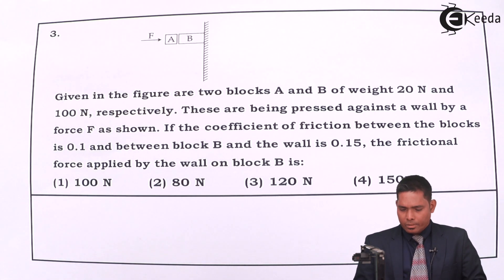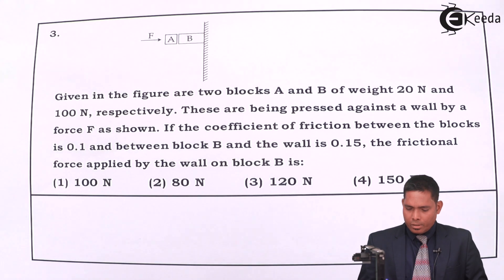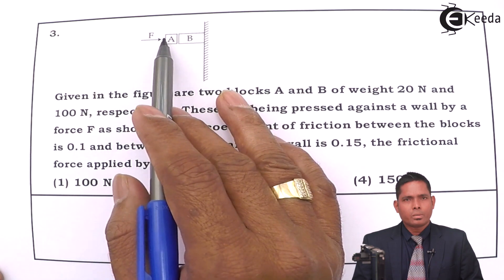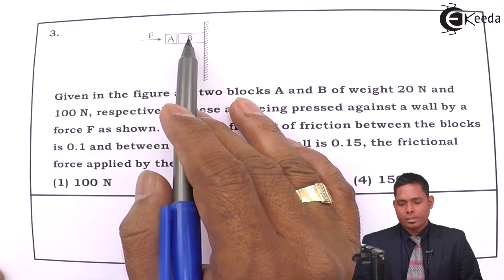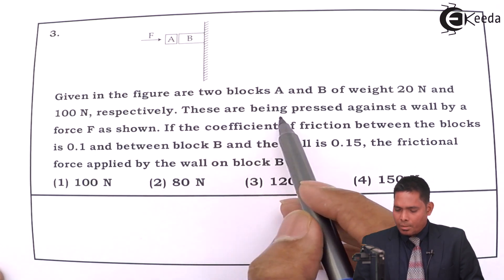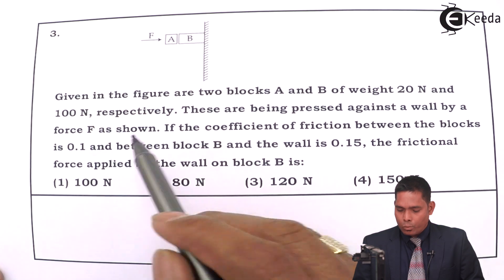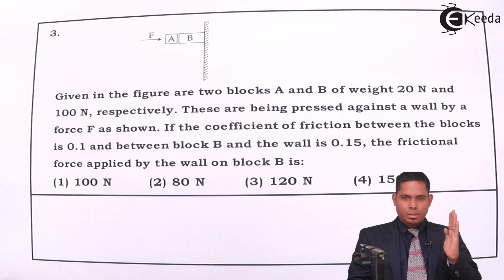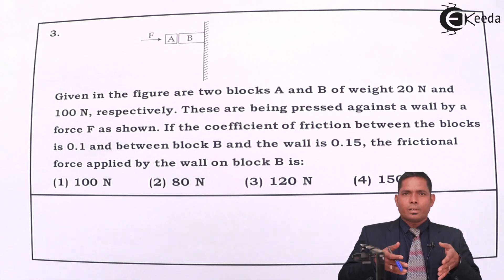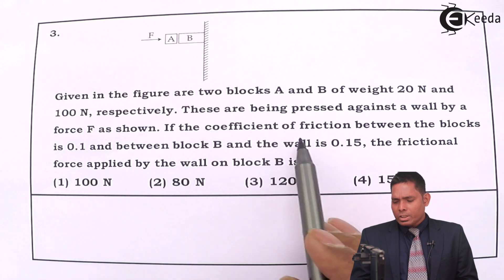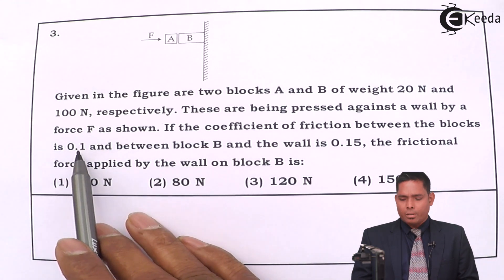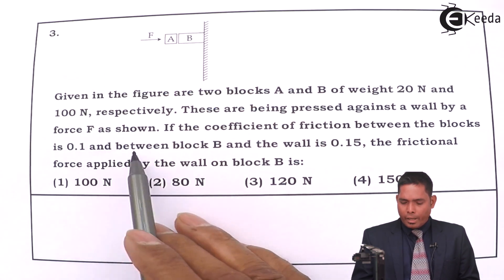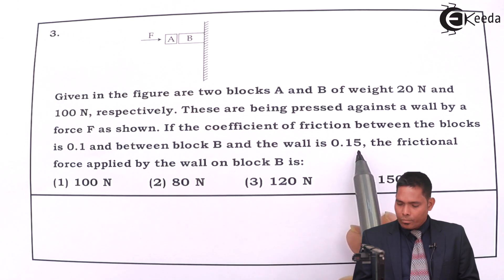Let us move to question number three. Given in the figure are two blocks A and B of weights 20 Newton and 100 Newton — that means 2 kg and 10 kg. These are being placed against a wall by a force F. The coefficient of friction between the blocks is 0.1, and between the block and the wall is 0.15.